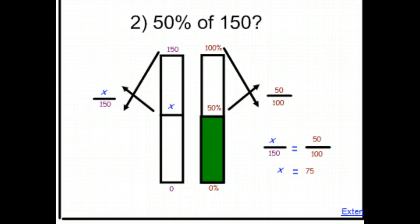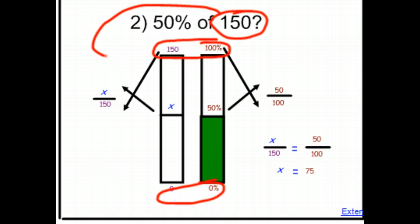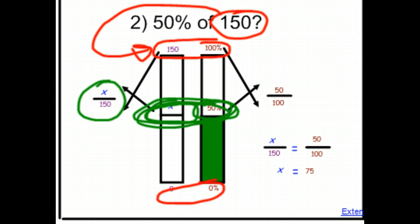For number 2, we've done the same thing. 0% at 0, 100% at 150 because we're finding what 50% is of this number 150. We've drawn our percent bars so that 50% is here. Mark to the same place on the other one because these represent the exact same number. X out of 150 is the same as 50 out of 100. Set them equal to each other because they represent the exact same ratio and solved it as a proportion. X is equal to 75.